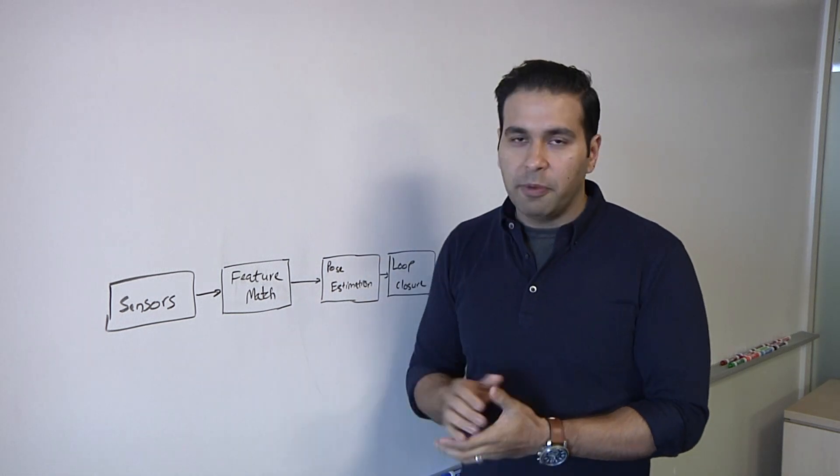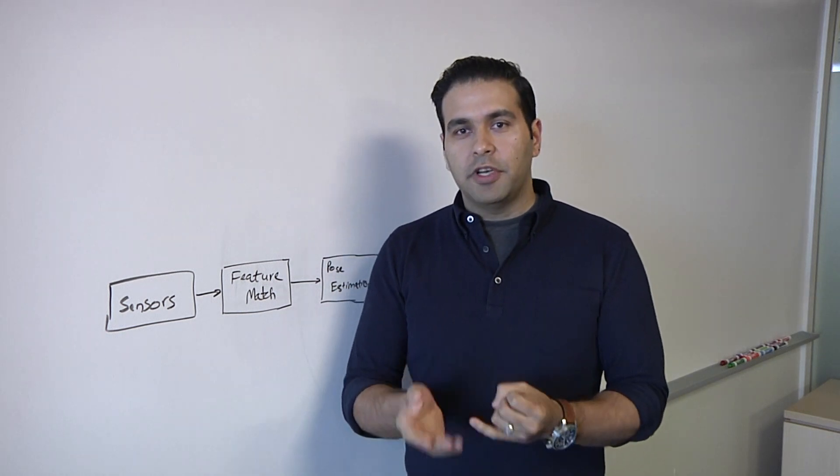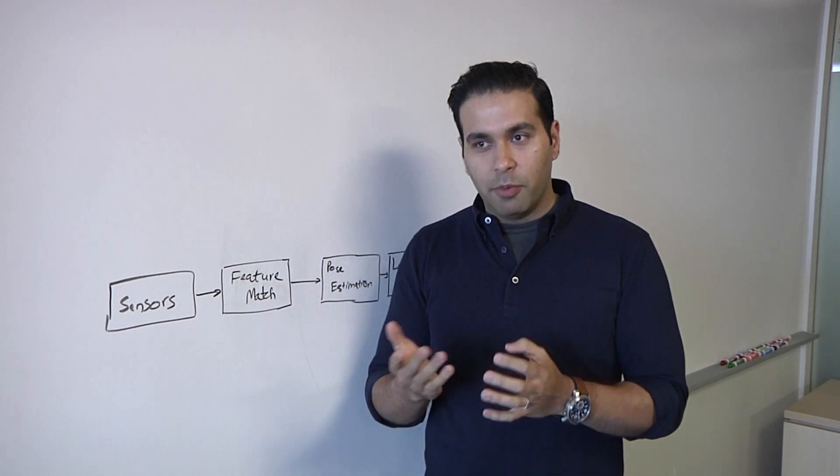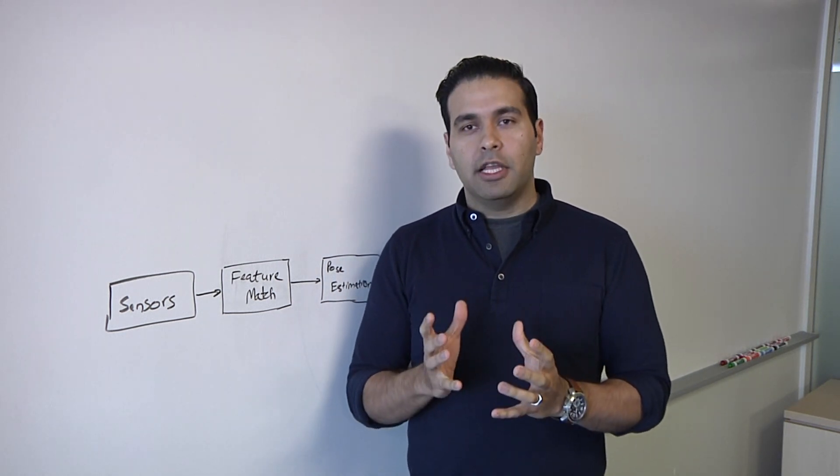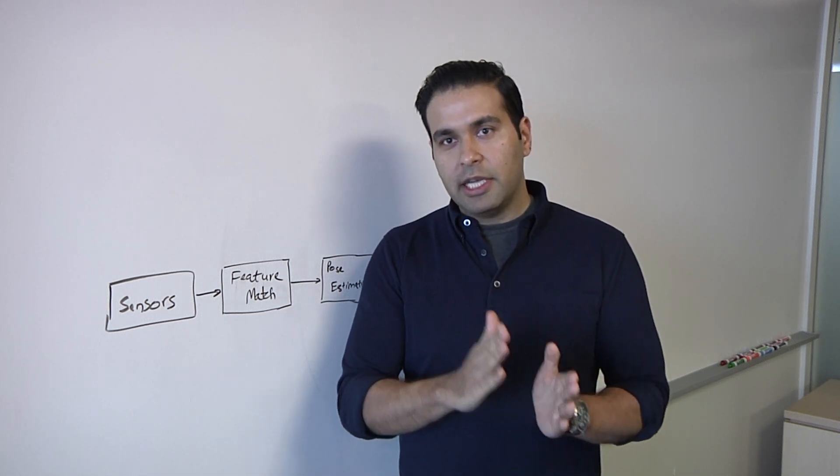Yeah. So, that's a great question. So, that's where your feature matching stage actually comes in. Because the goal of the features like SIFT, which stands for Scale Invariant Feature Transform, or ORB descriptors and things like that, the goal is to identify those interesting points or corners in frame number one.